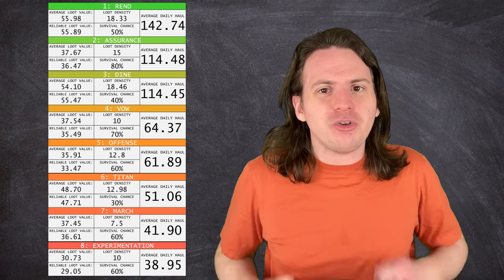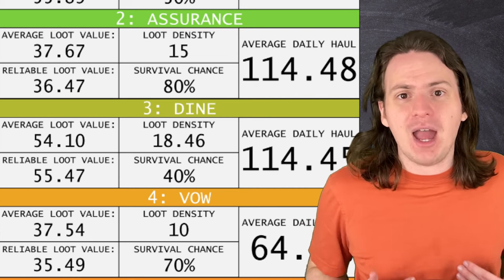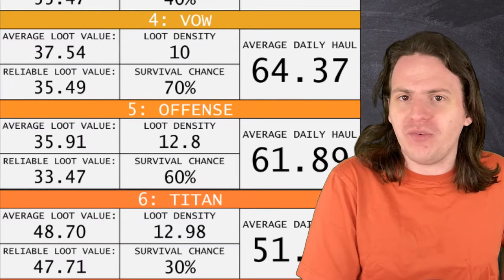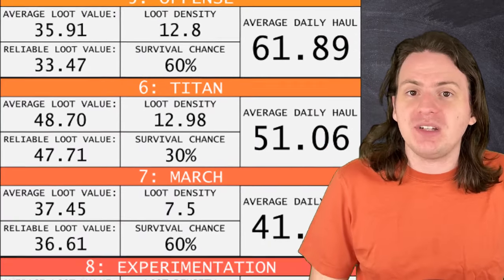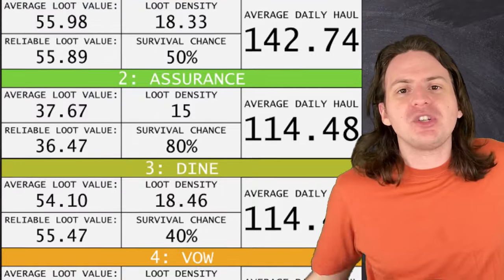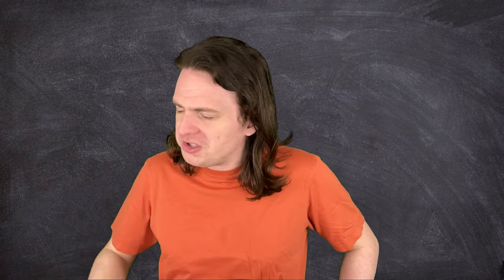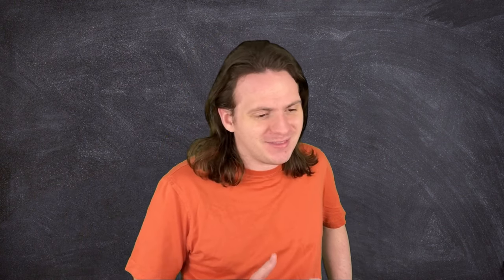So in summary, the ideal strategy for this game is to head to Assurance early game, basically every time. If the weather is bad, you could do a day in Vow or Offense instead, but steer clear of experimentation and March as much as I hate to admit it. Once you've gotten enough money to pay the entrance fee, head over to Rend. As long as you bring back four to five items per day, you'll be sitting pretty. Of course, the real truth is that no matter how well you do, that quota is going to keep going up. No matter what you do, there's going to come a time when you just can't bring back enough. And when that time comes, well, the company would like to wish you the best of luck in your future endeavors.